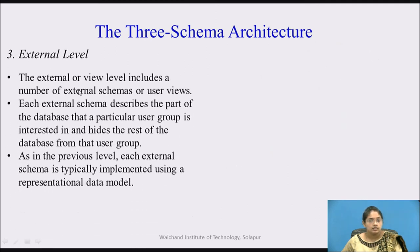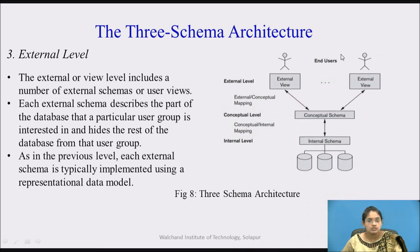Next is the external level. The external or view level includes a number of external schemas for end users. Each external schema describes the part of the database that a particular user group is interested in, and hides the rest of the database from other groups. Each external schema is typically implemented using a representation data model. The database management system provides multiple views for each user, so whichever view is required for a particular user is provided and all other details are hidden from that user.